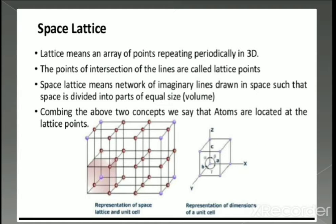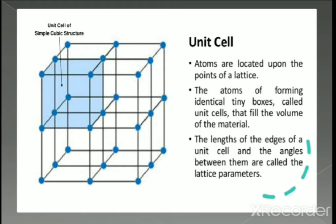Here is the representation of one unit cell in a three-dimensional manner. In a crystal lattice, atoms are located upon the points of the lattice. Each lattice point represents an atom, and atoms form identically tiny boxes called unit cells that fill the volume of the material. The length of the edges of a unit cell and the angles between them are called the lattice parameters. One cube is indicated as one unit cell in the form of a simple cubic structure.